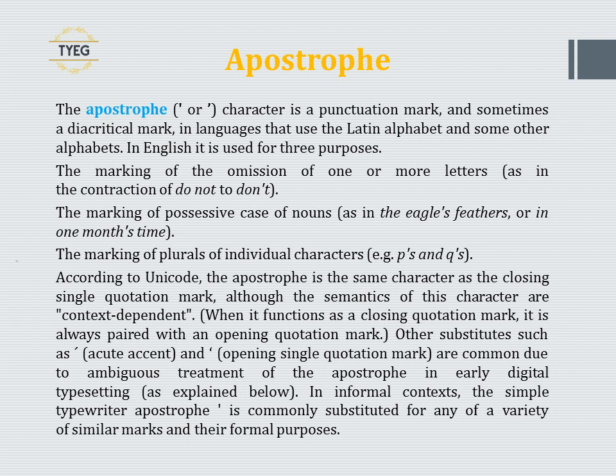In English it is used for three purposes: the marking of the omission of one or more letters, as in the contraction of 'do not' to 'don't'; the marking of the possessive case of nouns, as in 'the eagle's feathers' or 'one month's time'; and the marking of plurals of individual characters, for example 'Ps and Qs'.